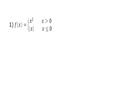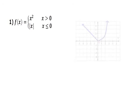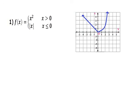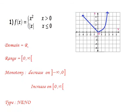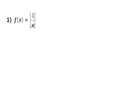For the piecewise function f(x) = x² when x > 0, and |x| when x ≤ 0: x² gives part of a parabola, and x ≤ 0 gives a straight line. The domain is ℝ and the range starts from 0 to infinity. The function decreases from negative infinity to 0, then increases from 0 to infinity. It is neither even nor odd.